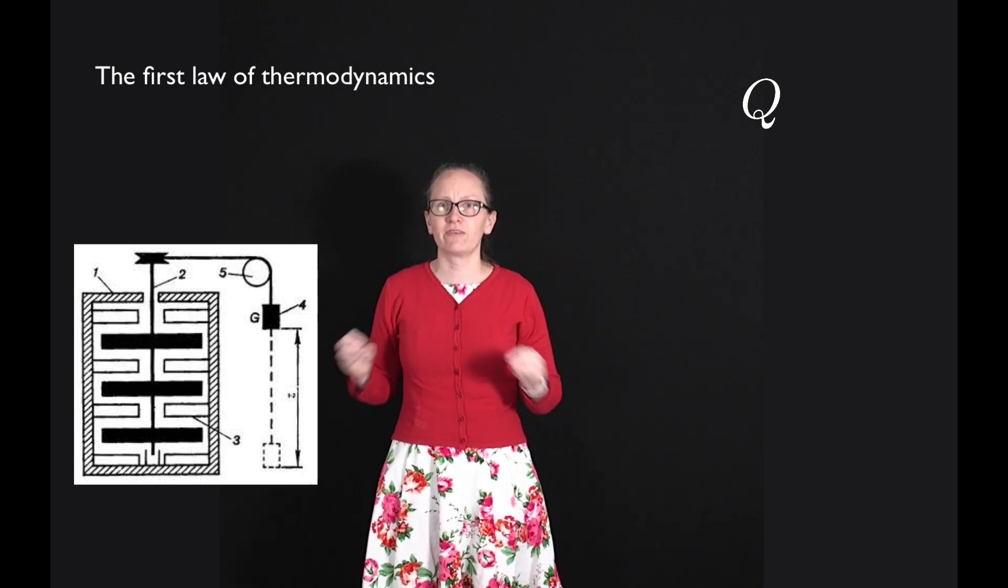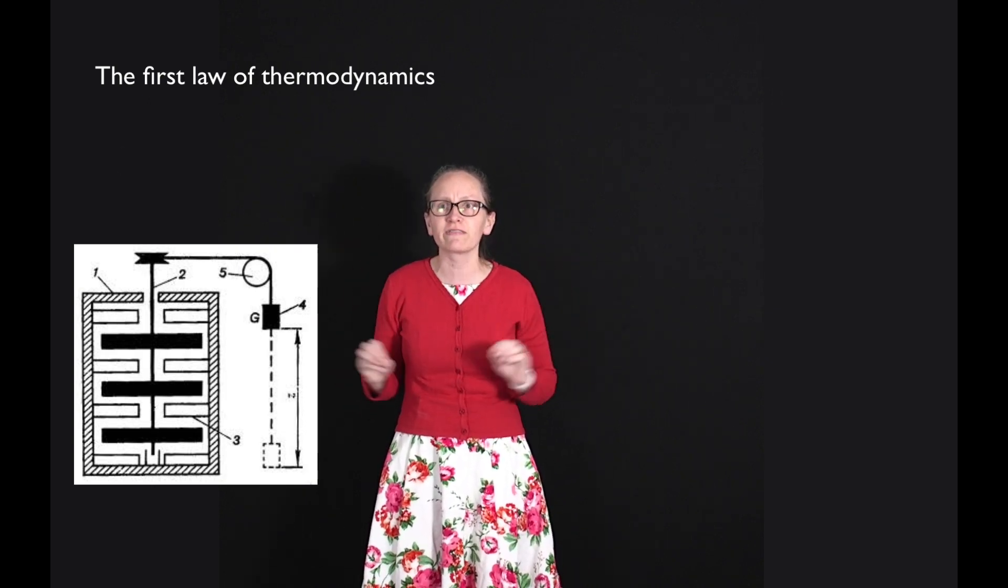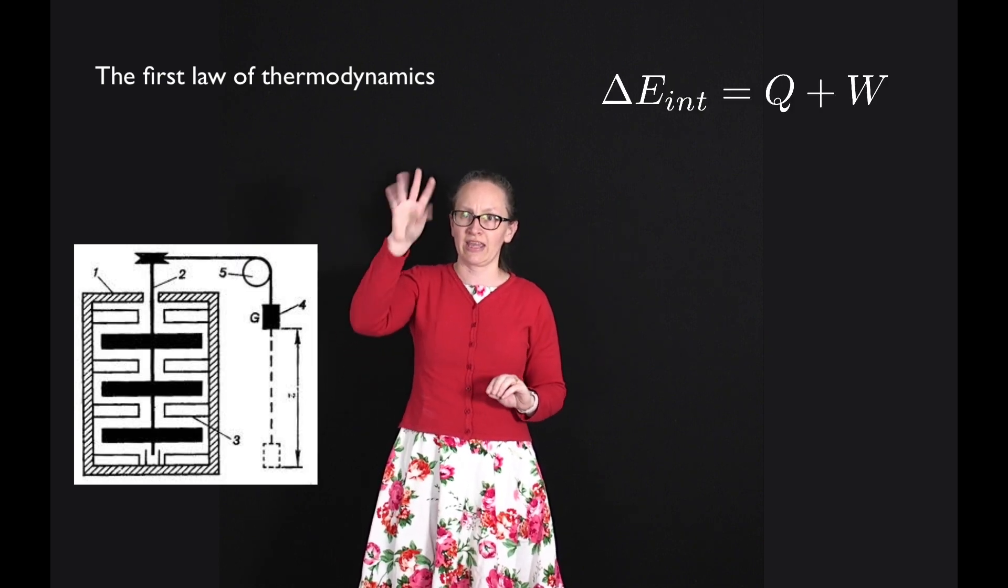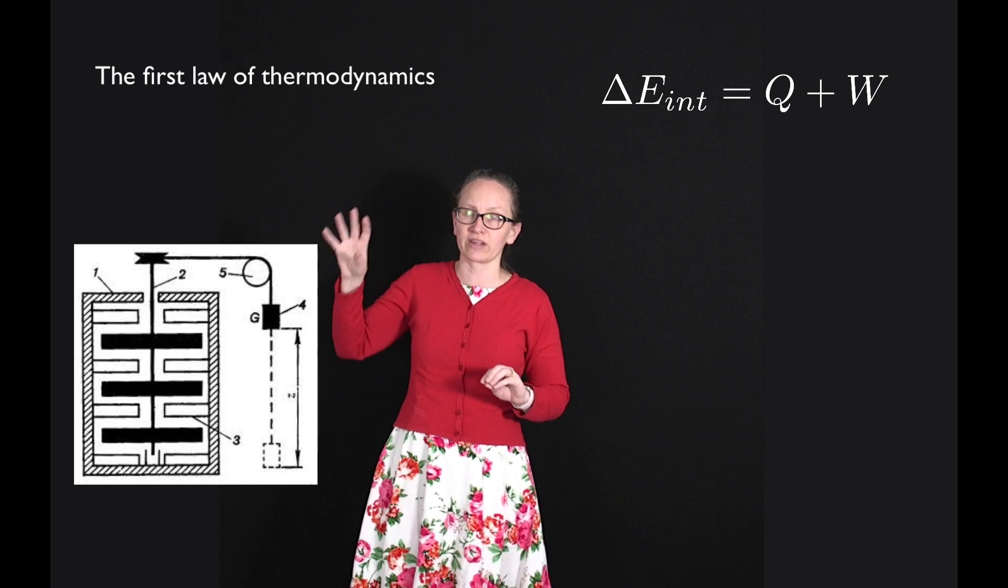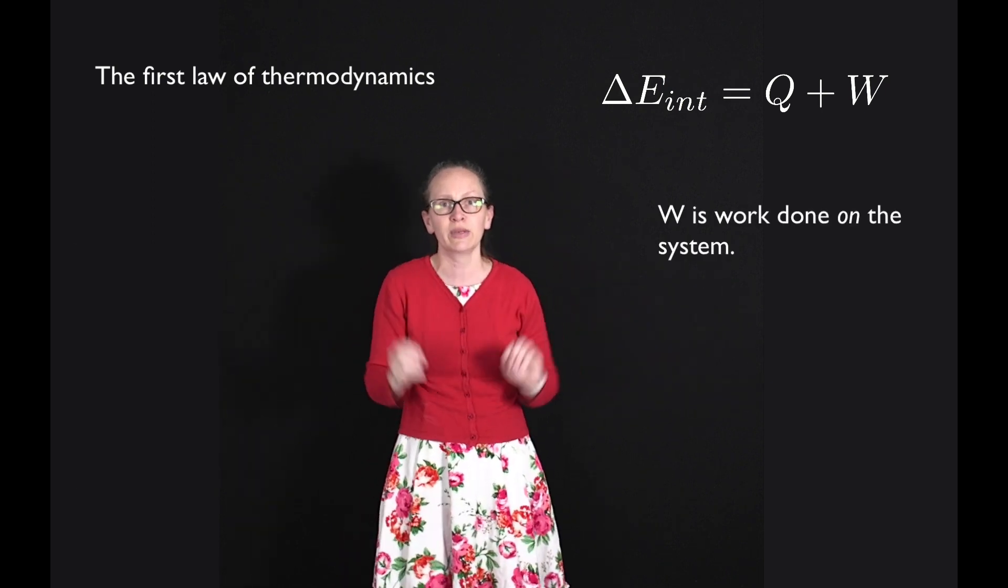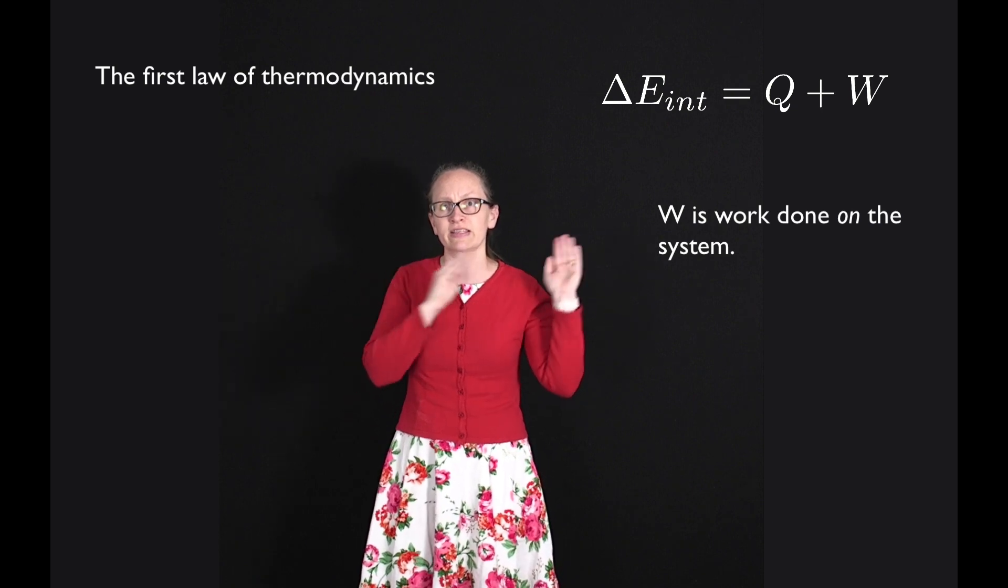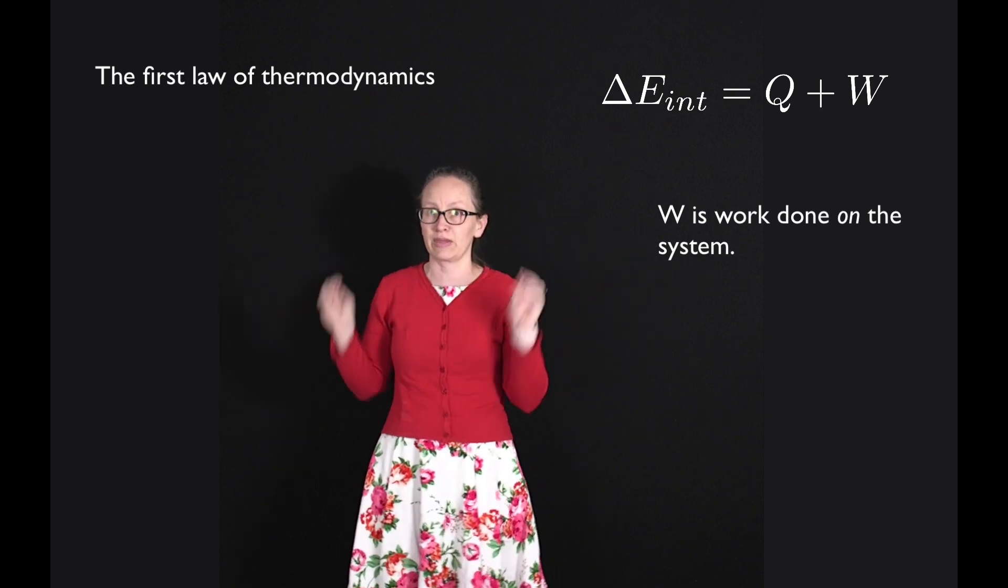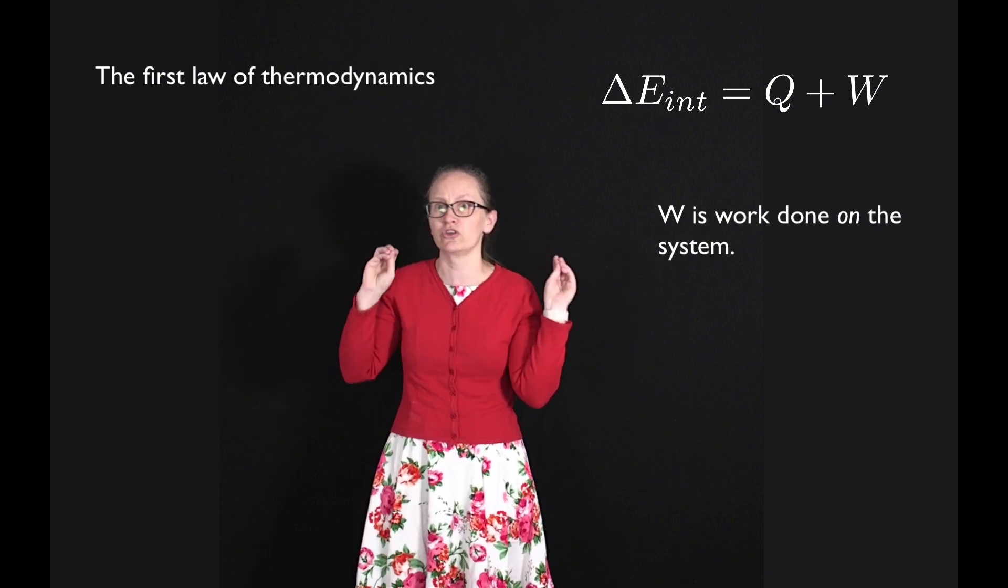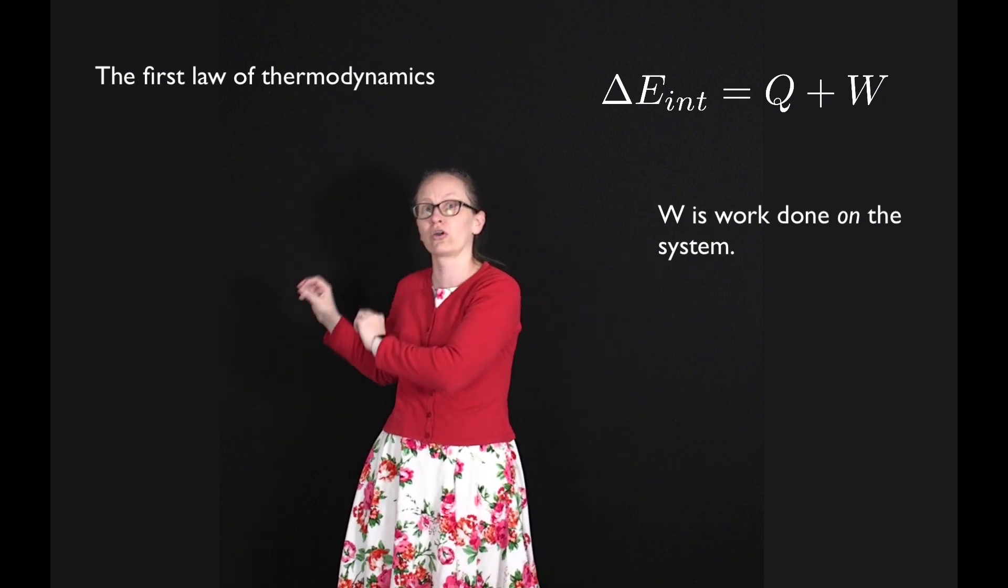So this brings us to the first law of thermodynamics. The first law of thermodynamics tells us that the change in internal energy of the system is equal to the heat transferred to the system plus the work done on the system. Now notice that I said work done on the system. In some textbooks they define W as the work done by the system in which case it has the opposite sign. But in this course we'll use W to mean the work done on a system.